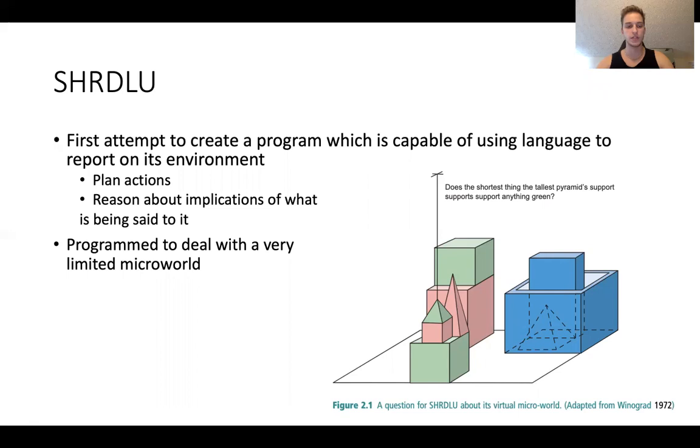Terry Winograd's dissertation in 1970 involved SHRDLU. SHRDLU was the first attempt to create a program that's capable of using language to report on its environment. To do this, it can plan actions and reason about implications of what's being said to it. It's programmed to deal with a very limited microworld.